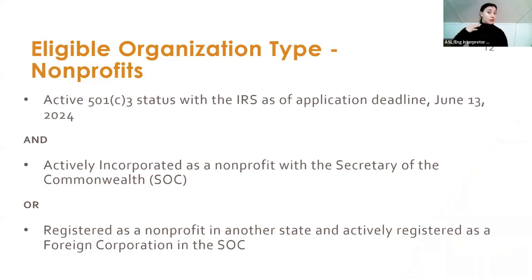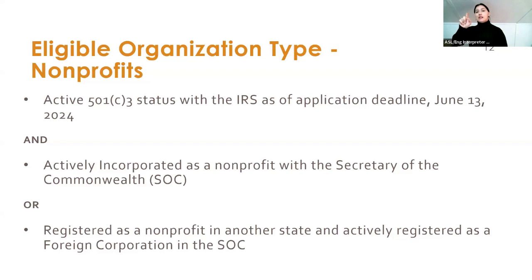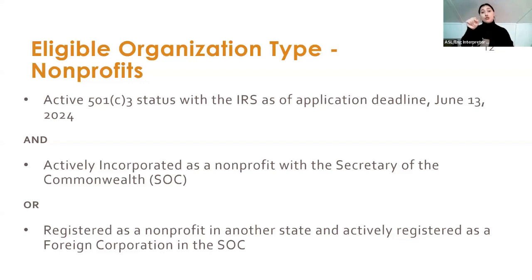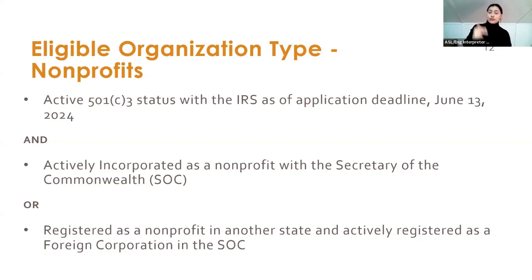Eligible types of organizations: there are two primary categories eligible for the Operating Grants for Organizations program — nonprofits and cultural affiliates. Eligible nonprofits are independent entities with their own 501(c)(3) status with the IRS, and they need to be registered with the Massachusetts Secretary of the Commonwealth — either incorporated in Massachusetts or registered as a foreign corporation. Those statuses need to be up to date — not dissolved, not revoked — at the time of the application, by June 13th. Now is a good time to check if you're not sure.